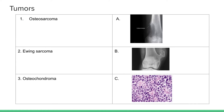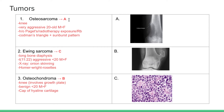Moving on to some tumors. Osteosarcoma is a very aggressive tumor, mostly around the knee, mostly in 20-year-olds — teenage to early 20s. If it's an older patient, there usually has to be a history of Paget's disease or radiotherapy exposure. In younger patients it's mostly due to a retinoblastoma gene mutation — kids who develop retinoblastoma in the eyes have a very high probability of developing osteosarcoma in their teenage years. On x-ray you can see Codman's triangle and the sunburst pattern.